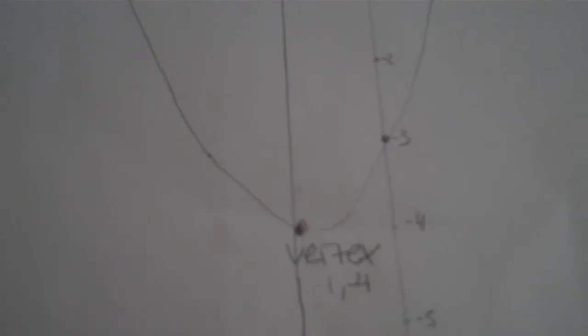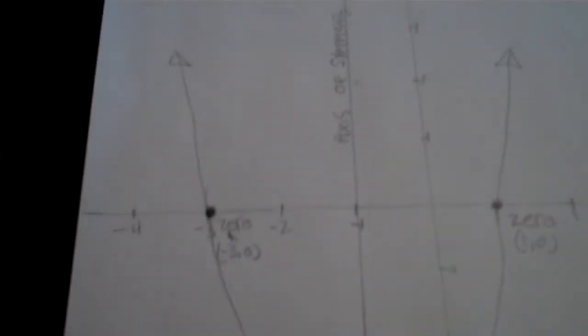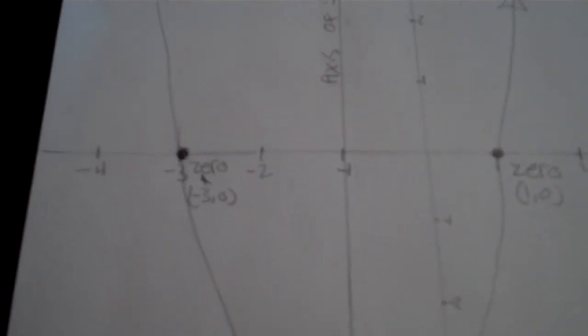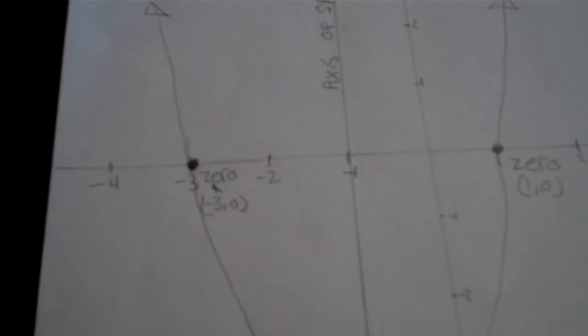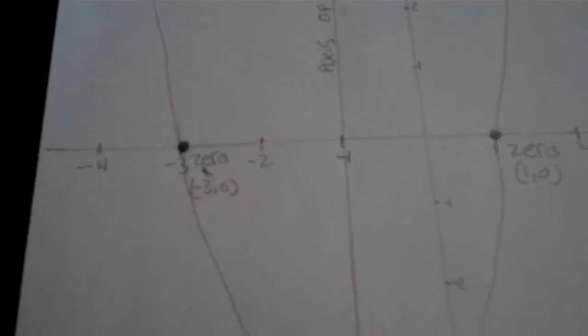Also, I have the vertex labeled down here, which is negative 1, negative 4. Also, here I have the axis of symmetry labeled, which is just on the line x equals negative 1. The axis of symmetry divides the parabola into two equal halves. Thanks for watching.